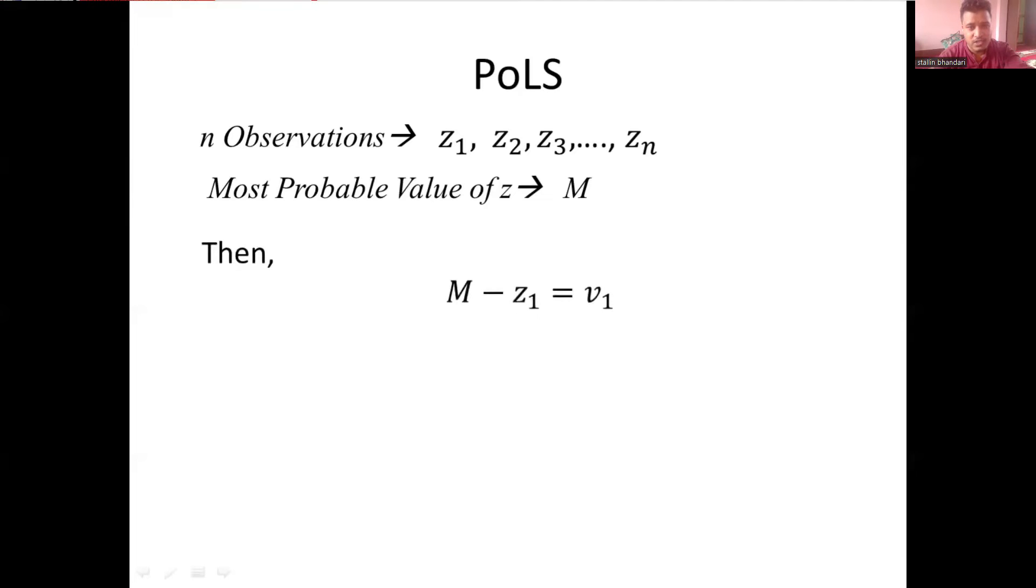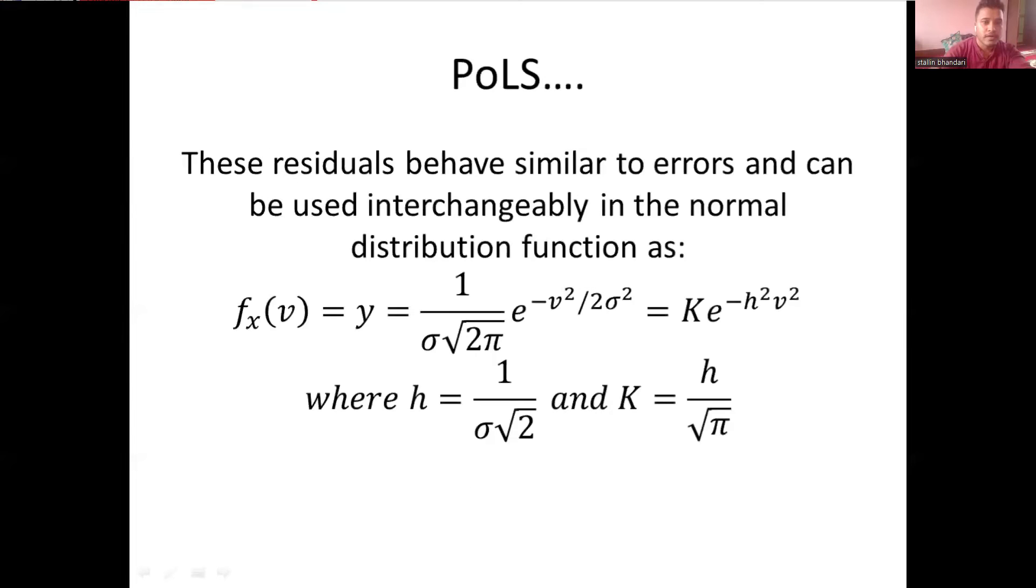Then we can calculate each of the residuals by subtracting observation values from the most probable value. And these are our residuals: v1, v2, v3, and so on up to vn. And one thing we have to take into consideration, that is,